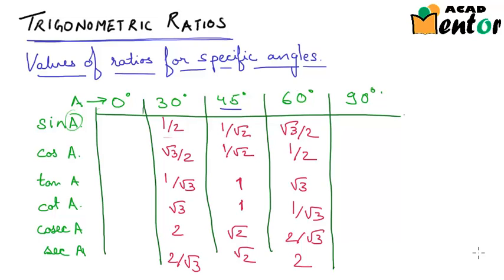Hi guys, we were talking about trigonometric ratios for a few specific angles. So last time we saw our table looked something like this, where we had seen the values of these ratios for 30 degrees, 45 degrees and 60 degrees. Now in this video we will see what are the values of these ratios for 0 degrees and 90 degrees.